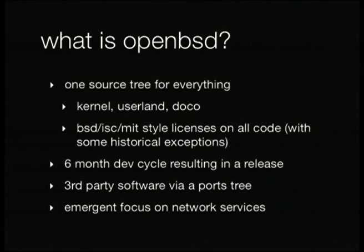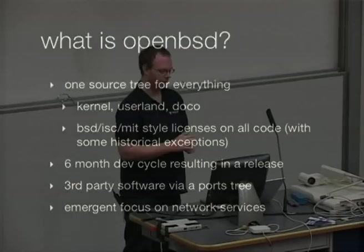Unlike some other projects, we have one source tree for everything: our kernel, our userland, all our documentation, our build infrastructure, our source control system — it's all in one source tree. All the code, new code especially, is BSD, ISC, or MIT-style licensed. We have some historical exceptions, such as the toolchain. There aren't any good alternatives to GCC, so we're using GCC, which is GPL. There are a few other bits like that, but the compiler's the big one.